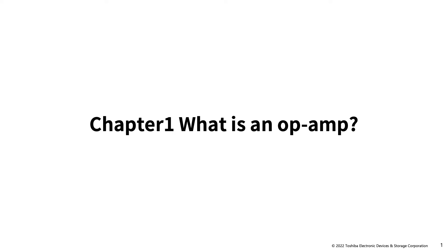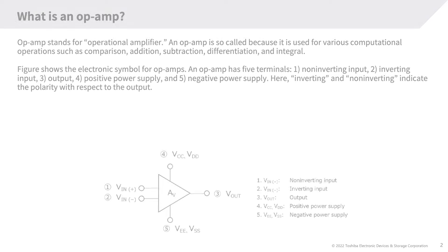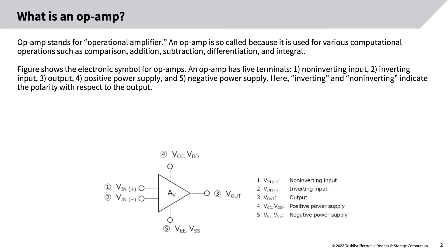Chapter 1: What is an op amp? Op amp stands for operational amplifier. An op amp is so called because it is used for various computational operations such as comparison, addition, subtraction, differentiation, and integration. The figure shows the electronic symbol for op amps. An op amp has five terminals: 1) non-inverting input, 2) inverting input, 3) output, 4) positive power supply, and 5) negative power supply.